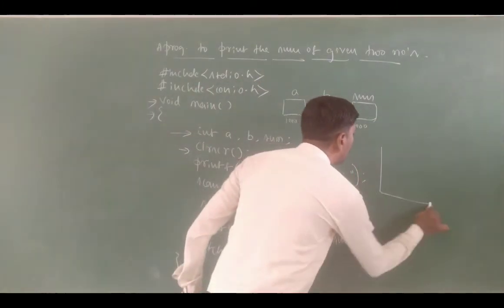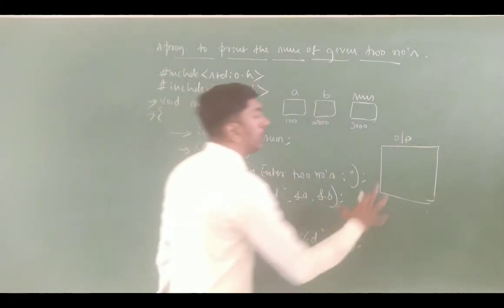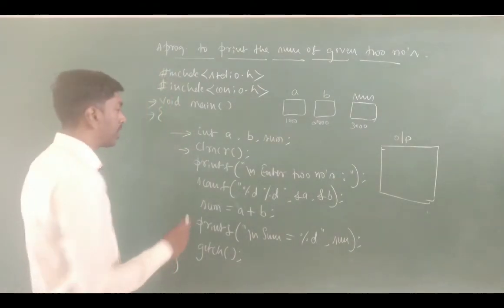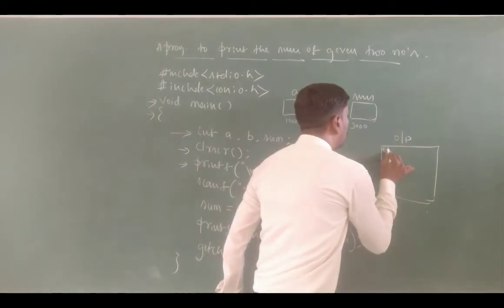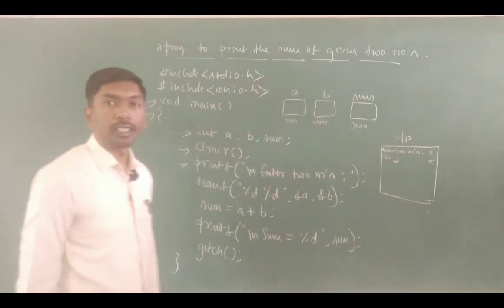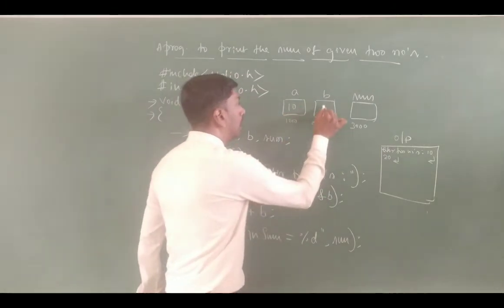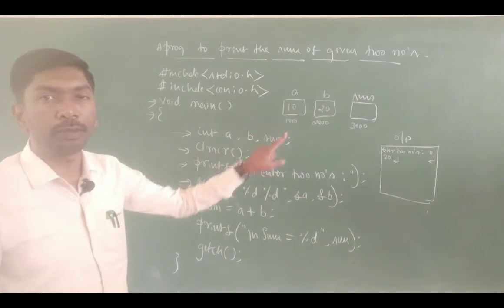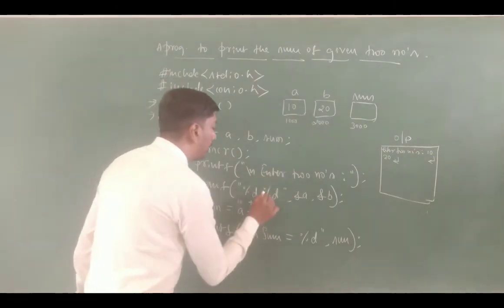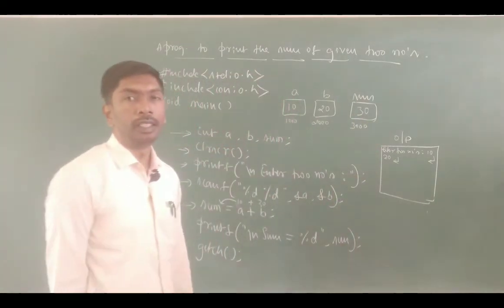Next clrscr() — all output screen content is erased, cursor placed at top-left corner. Next printf: "Enter two numbers". If I enter 10, press enter, then 20, press enter — scanf stores: a has 10 stored, b has 20 stored. Next: sum = a + b — a is 10, b is 20, so 10 + 20 = 30. Sum has 30 stored.